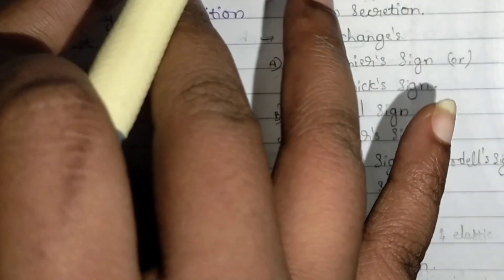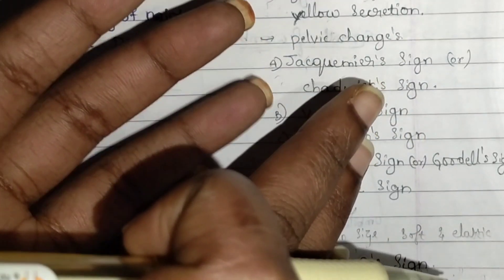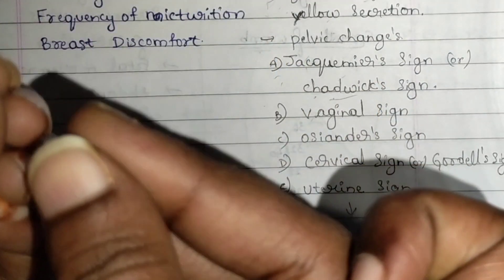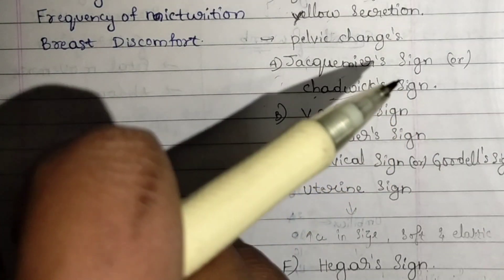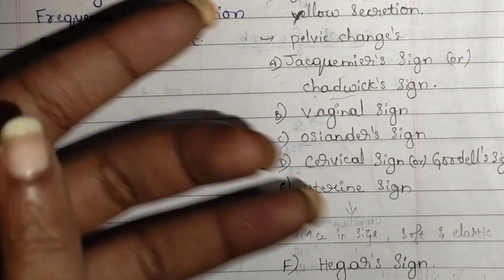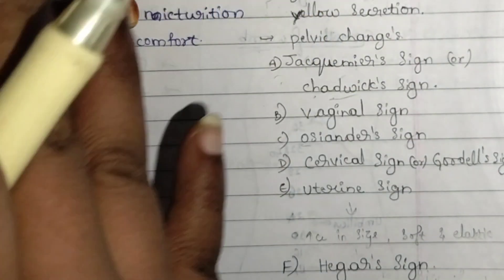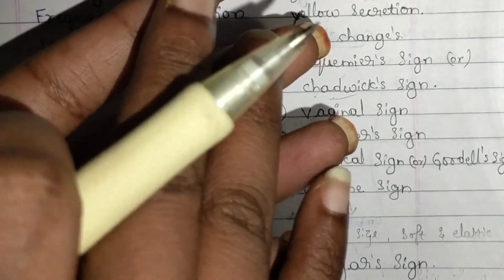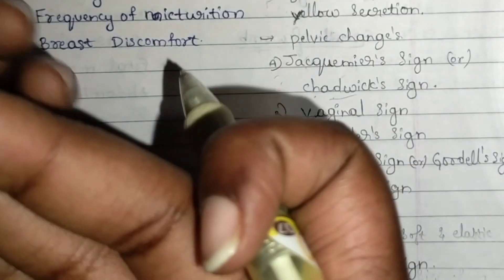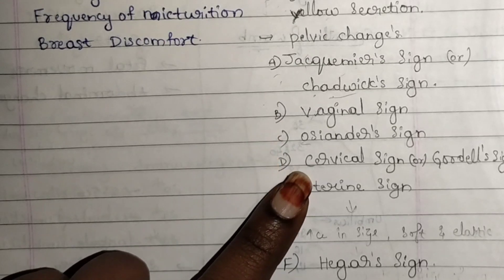The vaginal sign is that the vagina becomes softer, and this is seen around the sixth week of pregnancy — the vagina becomes much softer than before. Next, Ossander sign: you can see pulsation and hear a beat in the vaginal wall, and that is the Ossander sign.